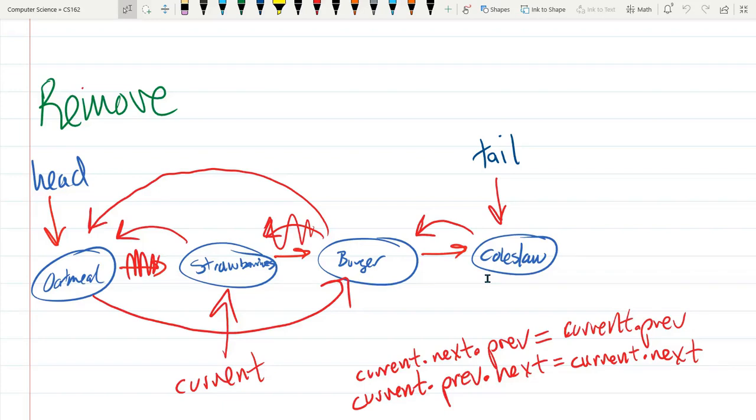If the index is bigger than half the size it's best to start using tail and then going previous, previous.